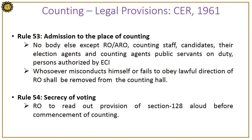Rule 53 – admission to the place of counting: nobody else except the Returning Officer, ARO, counting staff, candidates, their election agents and counting agents, public servants on duty, and persons authorized by ECI can enter the place of counting. Whosoever misconducts himself or fails to obey the lawful direction of the Returning Officer shall be removed from the counting hall.